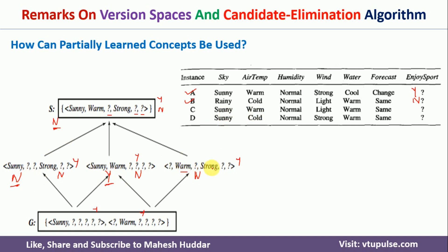Continuing with the third example: warm and strong vs. warm and light — no match, classified as no. Sunny and sunny — perfect match, yes. Warm and warm — perfect match, yes. So the results are: no, no, yes, no, yes, yes — three hypotheses classify it as yes and three as no. Since there is an equal split, we cannot say whether this example is classified as yes or no. That's an ambiguity.